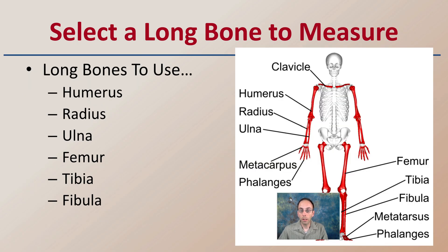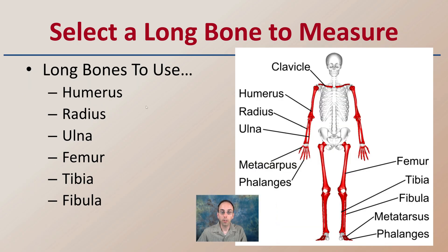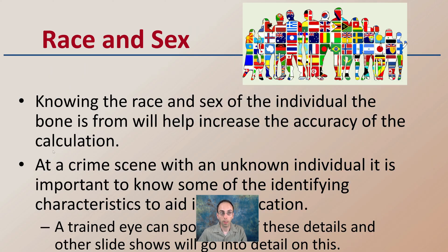You want to select a long bone to measure. Some listed here include the humerus, the radius, the ulna, the femur, the tibia, or the fibula — these are the bones typically used in this measurement process.